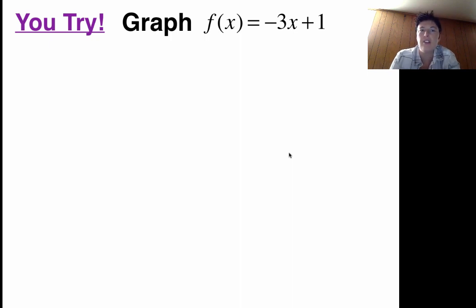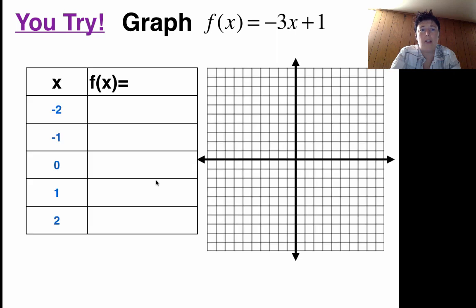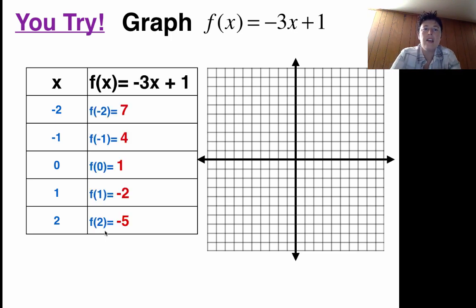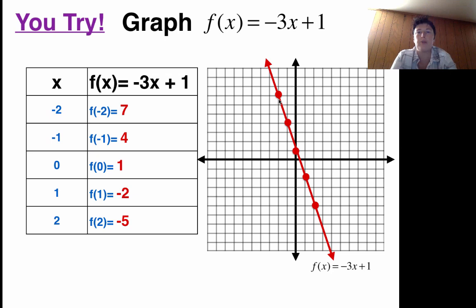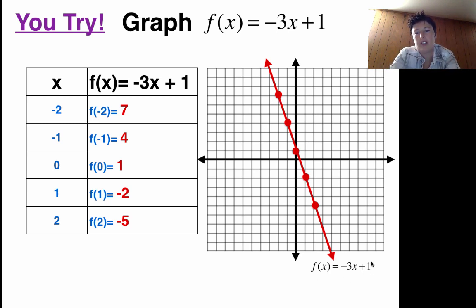Once you're done, unpause and let's check your answer. My table is set up just like before: x and f(x), with inputs negative 2, negative 1, 0, 1, 2. Because my equation is negative 3x + 1, I find f(−2) through f(2). Here's what I got: 7, 4, 1, negative 2, negative 5. Check your table numbers and see if we match. If your table looks different, go through it and see what mistake you made. On my graph I plot the points — negative 2 and 7 means back to negative 2, up to 7. My line should be going in a downward slope, and I labeled the function negative 3x + 1 down by the arrow.